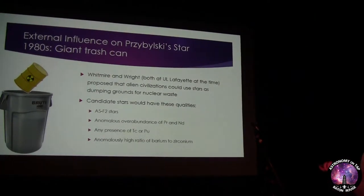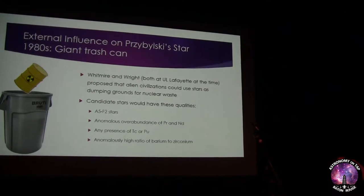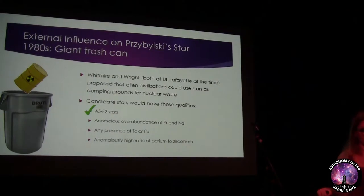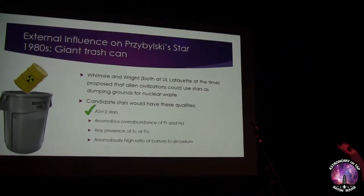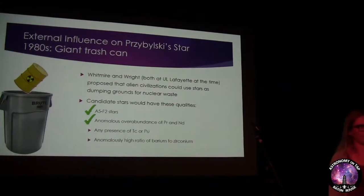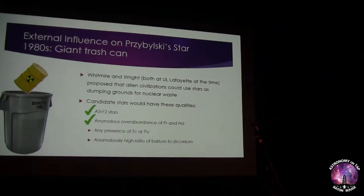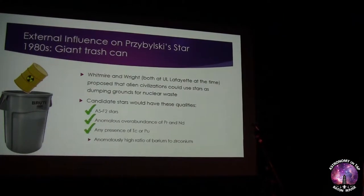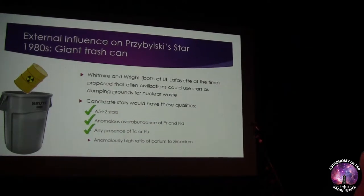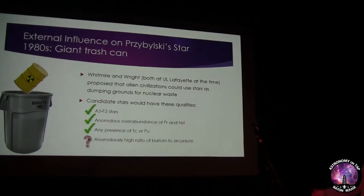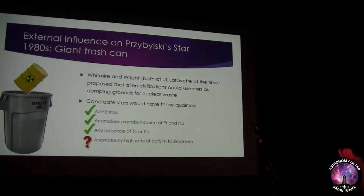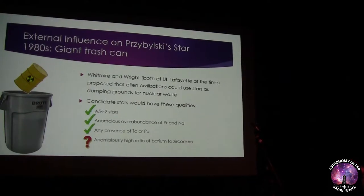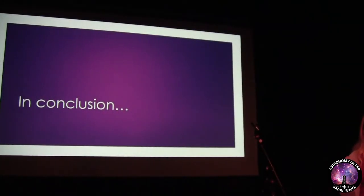So with Chbilsky's star, looking at these candidate qualities: it is in fact spectral type A. In the 2000s we discovered it does have a weirdly high amount of praseodymium and neodymium. It does have plutonium — we haven't seen technetium but it could be there and we just don't know the spectral lines. For the last criterion, we haven't looked at it, but we haven't ruled it out. We've used a bunch of other natural resources as trash cans, so why not the sun?